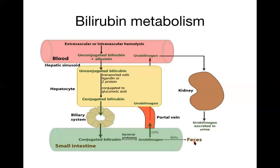In obstructive jaundice, if there is complete blockage of the bile duct, no bilirubin passes into the small intestine — the stool becomes clay-colored or very pale. The urobilinogen reabsorbed into circulation is excreted through the kidney into the urine, which is why urine becomes high-colored in obstructive jaundice.